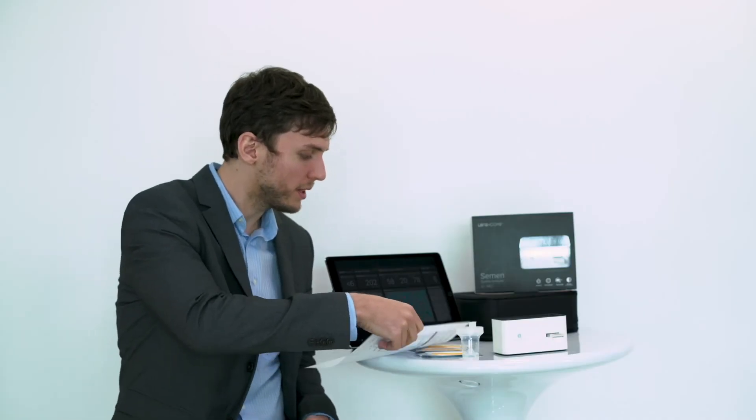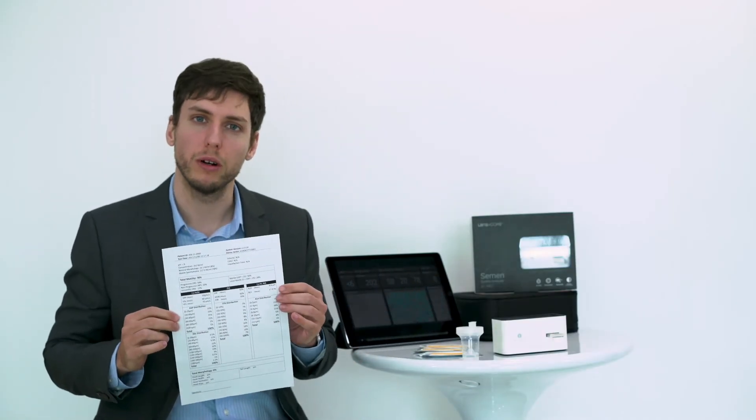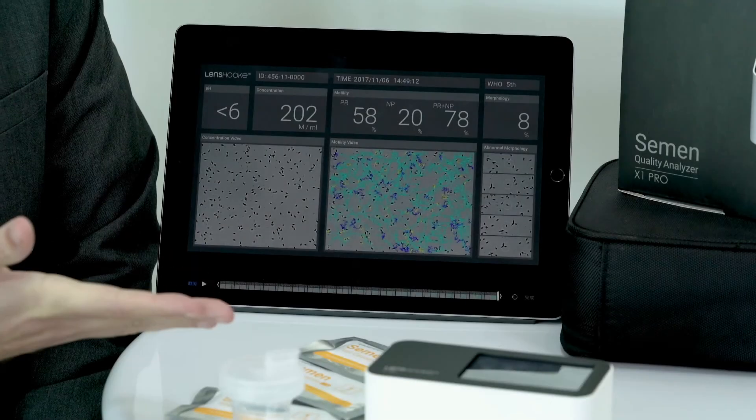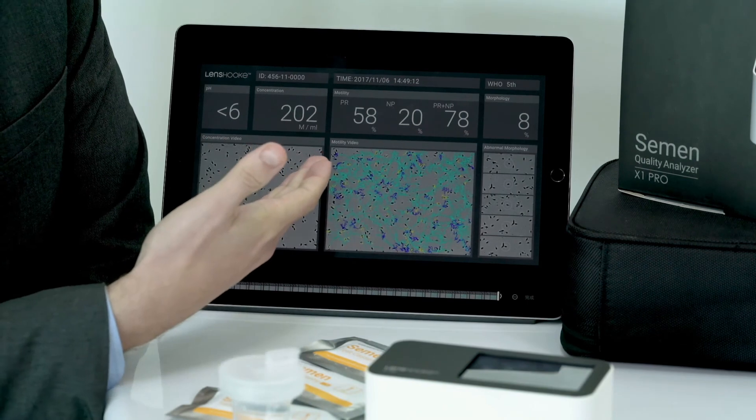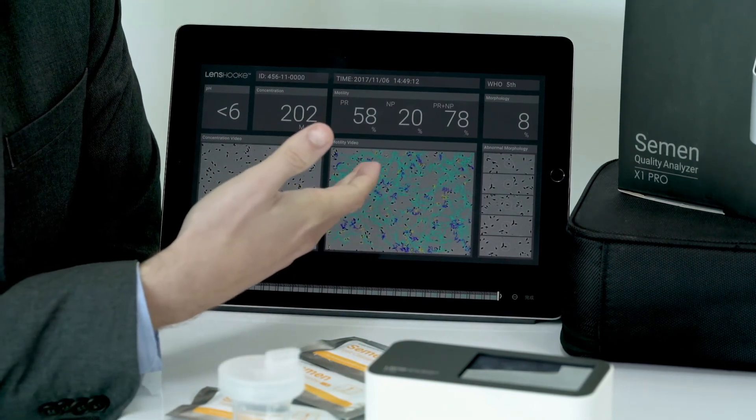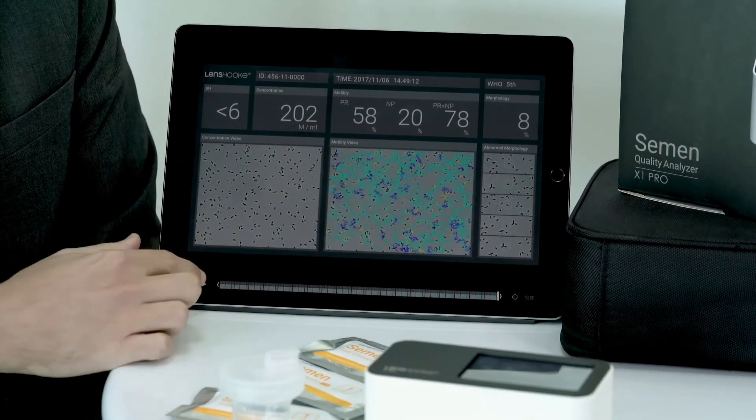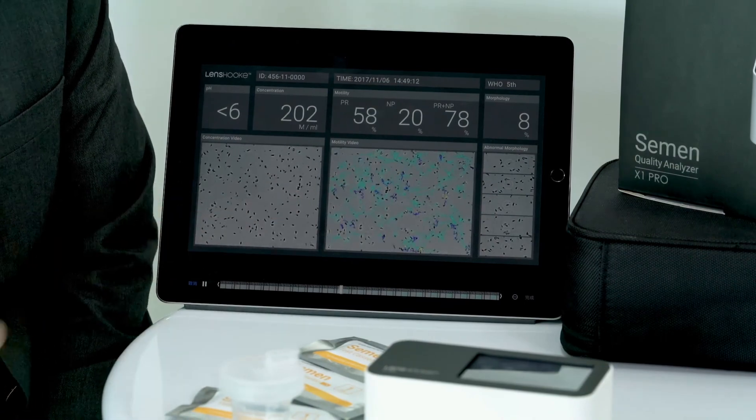The X1 Pro can provide a very professional report for clinical use with all the data and images. From the screen, you can see the pH value, concentration, morphology, as well as the motility. Additionally, you can even see live results of the sperm.